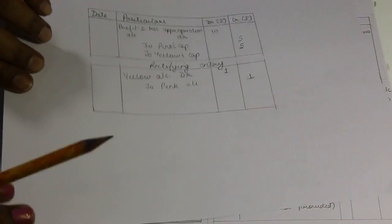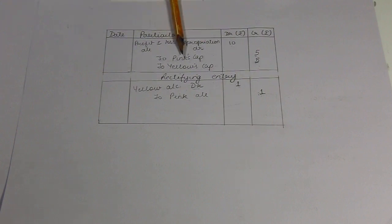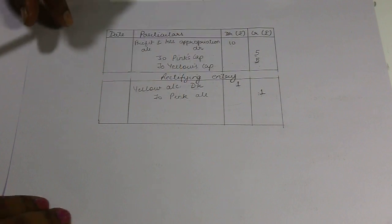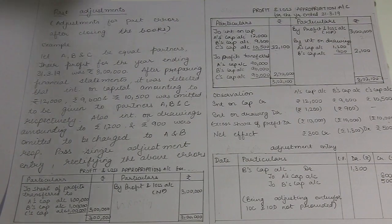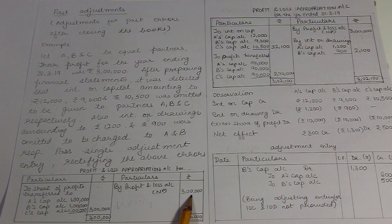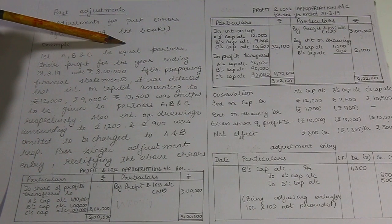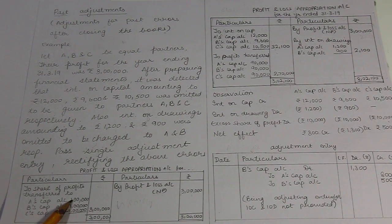If we recall the first case, what did we do? There was already an entry in the books of accounts and we passed a rectifying entry. In the Profit and Loss Appropriation Account, profit was Rs.3 lakh, which was first transferred and then distributed equally as all three partners were equal partners.